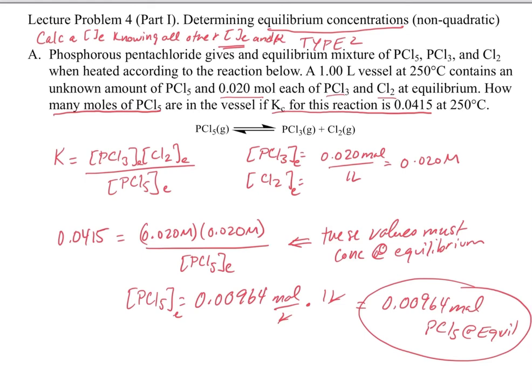Things to watch out for: be cognizant of what they're giving you. If you identify concentrations as being at equilibrium, you can immediately put them into the expression. If you identify them as initial, you cannot put them into the equilibrium expression — it only works with equilibrium values. Also, when working with the K equation, convert everything into concentrations at equilibrium. If you're given equilibrium values, you don't need an ICE table. It's only if you get initial values that you need one.